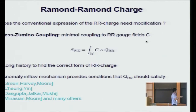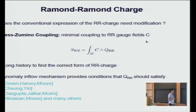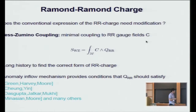Let me start with the minimal coupling of the D-brane to the Ramond-Ramond gauge field. Here, M is the worldvolume of the D-brane, C is the Ramond-Ramond gauge field, and Q is the Ramond-Ramond charge of the D-brane that we would like to determine. There is a long history of finding the correct form of this Ramond-Ramond charge.